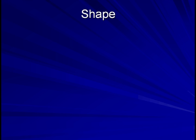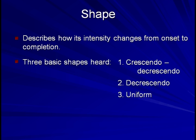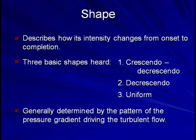The shape of a murmur describes how its intensity changes from onset to completion. There are three basic shapes: crescendo-decrescendo, decrescendo, and uniform — also called plateau, or holosystolic when occurring during systole. In general, crescendo-decrescendo and uniform murmurs are heard during systole, while decrescendo murmurs are heard during diastole. The shape of a murmur is generally determined by the pattern of the pressure gradient driving the turbulent flow, with the loudest segment occurring at the time of the greatest gradient, since this will be the point of the highest velocity.